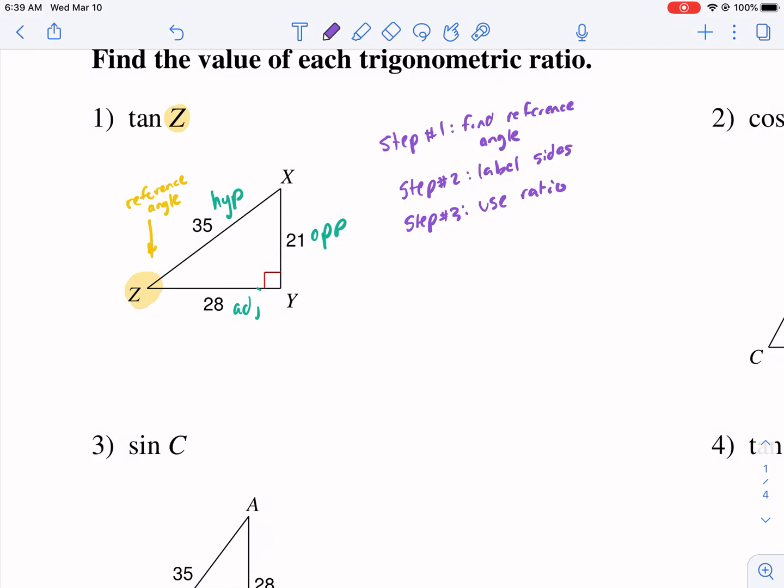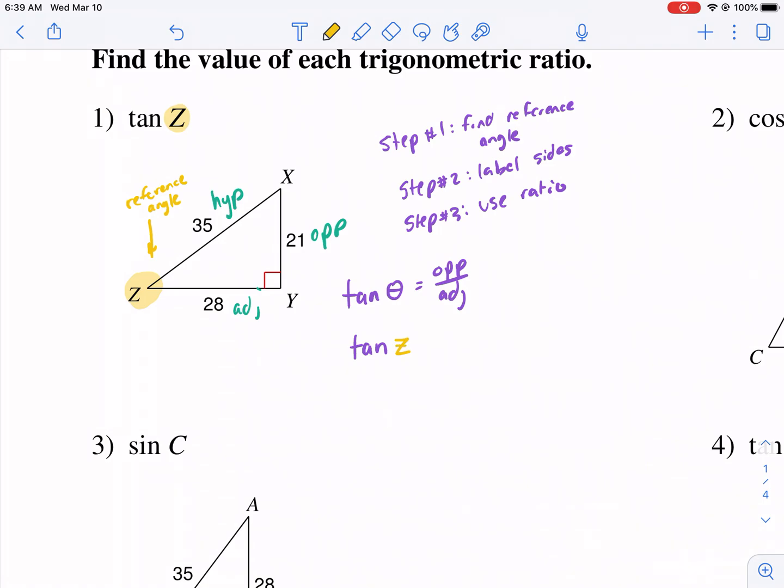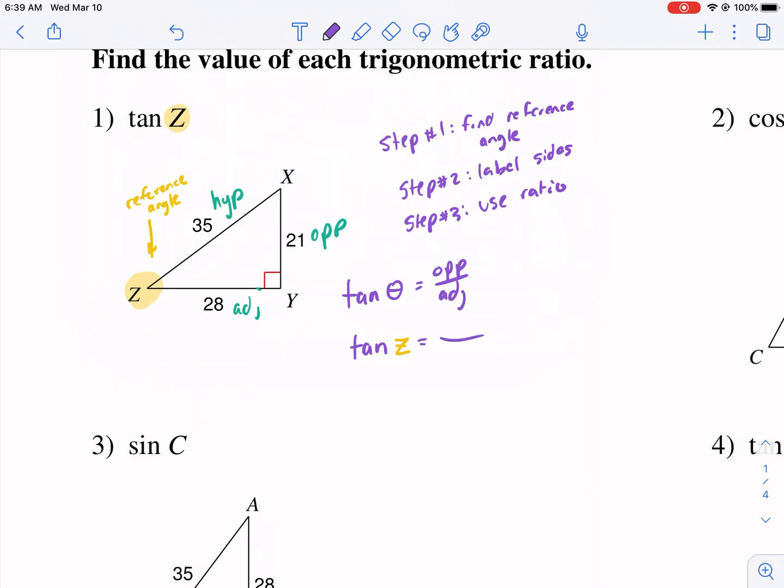So now we know that tangent of Z. Well, tangent of any angle is equal to opposite over adjacent. So for this one, we have tangent of Z. It's not tangent of just any angle. By the way, this is theta. That usually represents angle. This is equal to our opposite, which is 21 over our adjacent, which is 28.